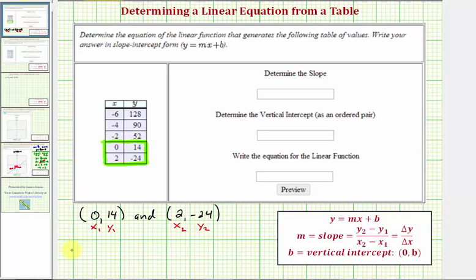So the slope m is equal to y sub two minus y sub one. That's negative twenty-four minus fourteen divided by two minus zero. So we have negative thirty-eight divided by two which equals negative nineteen. So the slope is negative nineteen.